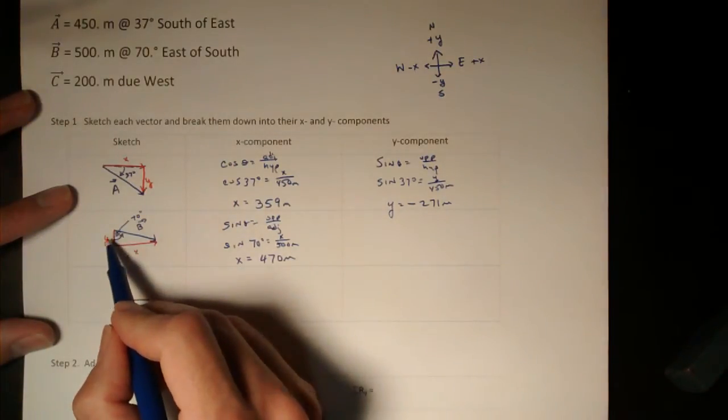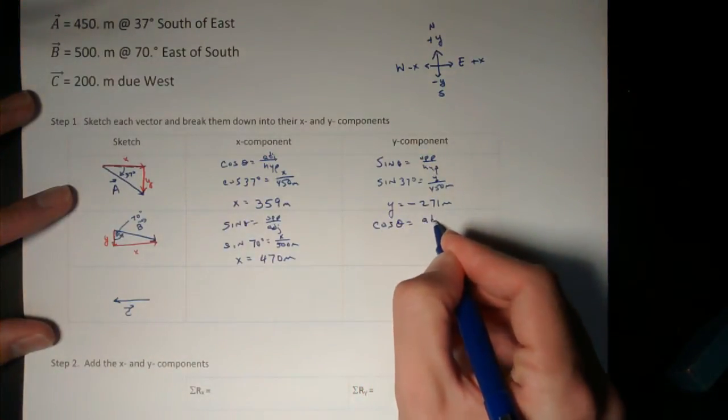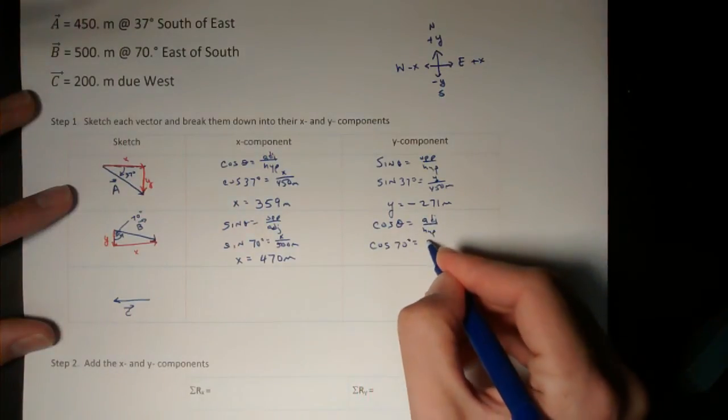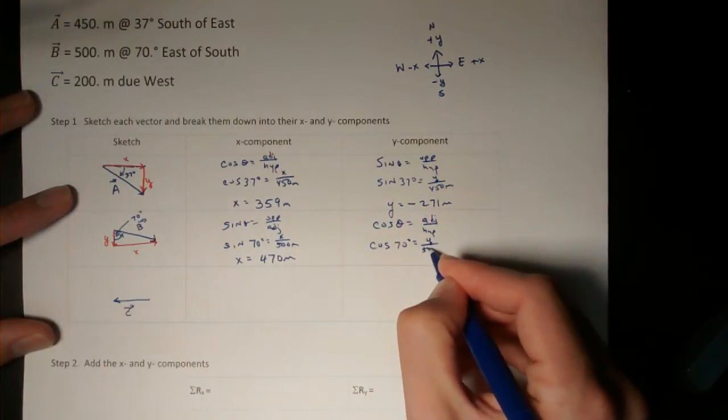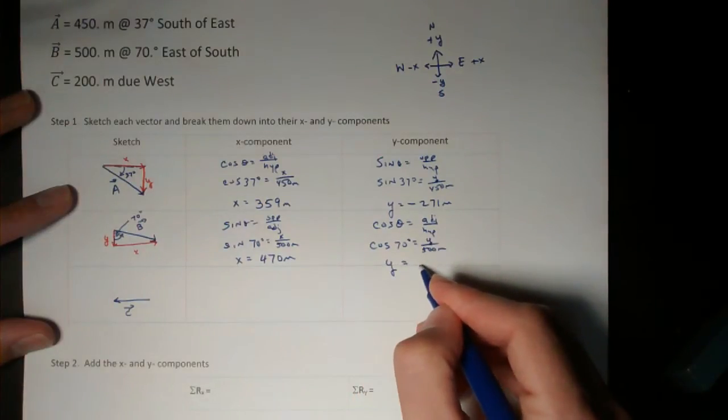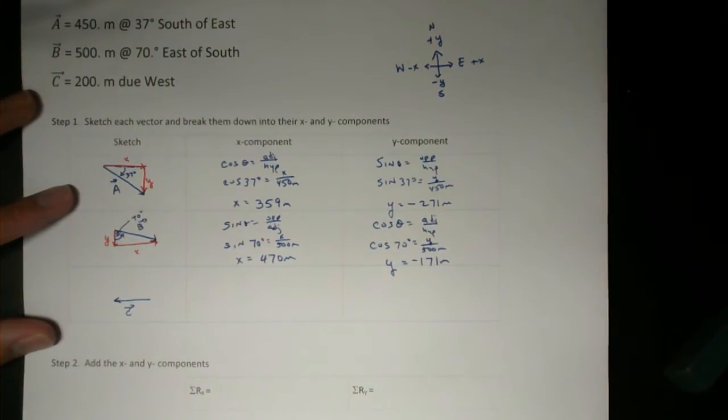To get the y component, which is adjacent to the angle, I'll use cosine theta equals adjacent over hypotenuse. Cosine 70 degrees is equal to y over 500 meters. And so the y component is 171 meters, but again it's in the negative y direction. So I'll insert a negative sign there.